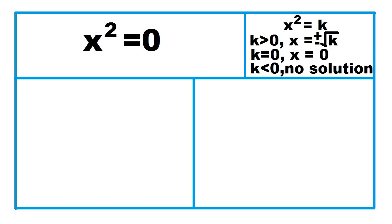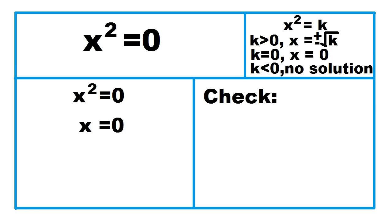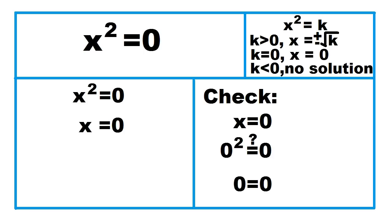Another example. The equation is already in the form x squared equals k, where k is equal to 0, meaning it has one solution. In this case, x equals 0. Let's check: for x equals 0, is the square of 0 equal to 0? Yes, 0 equals 0.